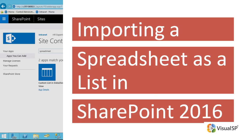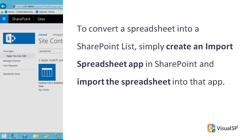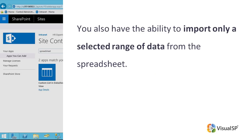Importing a spreadsheet as a list in SharePoint 2016. To convert a spreadsheet into a SharePoint list, simply create an Import Spreadsheet app in SharePoint and import the spreadsheet into that app. You also have the ability to import only a selected range of data from the spreadsheet.